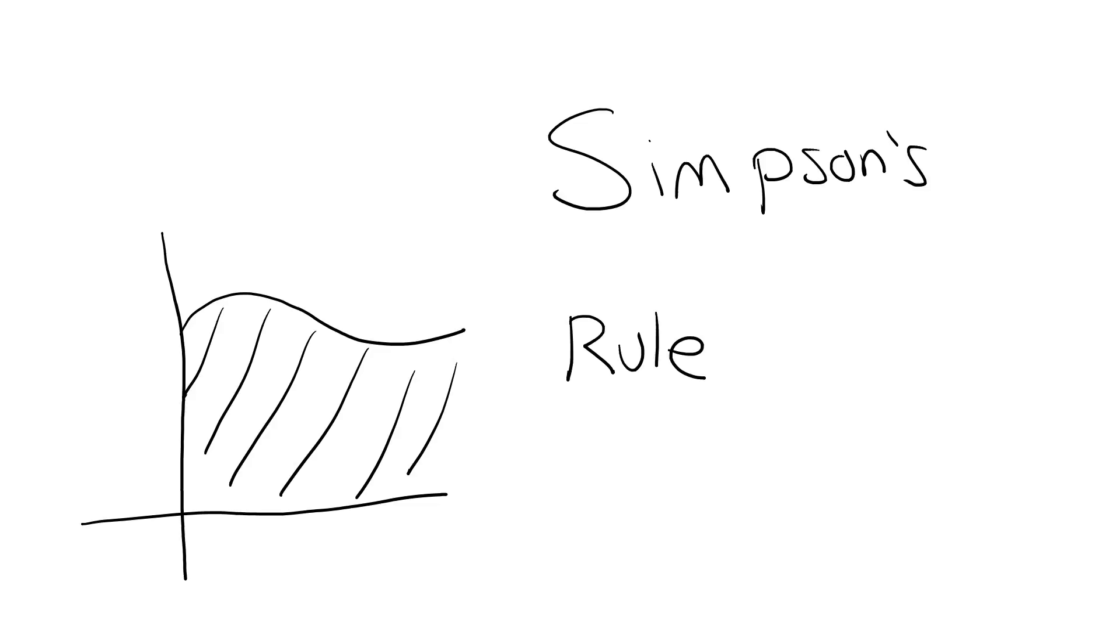We'll be using Simpson's first rule, so named because the multipliers follow a 1, 4, 1 sequence. Simpson's rule is handy in naval architecture because before CAD, naval architects would have to find water plane and station areas by hand.